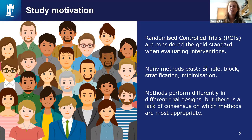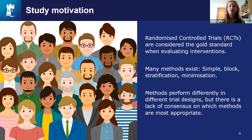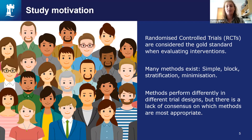Some research has shown that simple randomisation can have performance issues if you've got fewer than 200 participants, and other research shows that block stratification including site as a variable can cause predictable sequences in unblinded trials. There is, however, a lack of consensus from researchers on when each method is most appropriate. Some researchers, such as Stephen Sen, discuss the drawbacks of using restricted randomisation and how the analysis methods of randomised controlled trials were designed for simple randomisation, while other researchers consider minimisation as a gold standard.